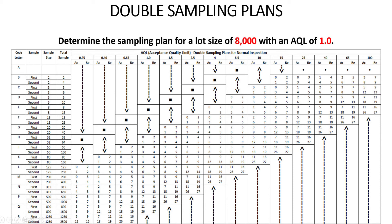That's double sampling. The benefit is that over the long run the average number of samples taken is actually less than single sampling, since you can often decide on just the first sample. The downside is it can be difficult to administer — for example, having to make two separate trips to the warehouse — so double sampling doesn't always make sense for everyone.